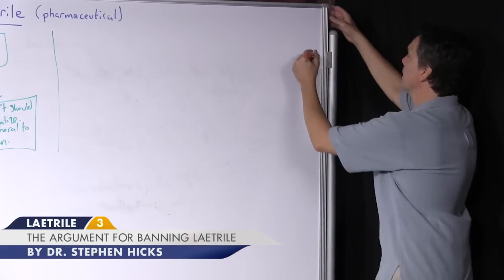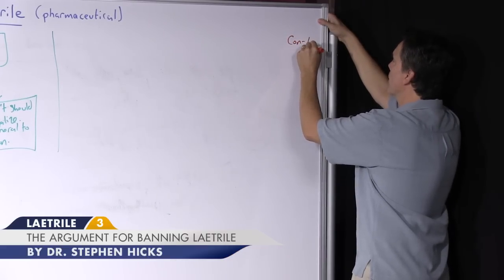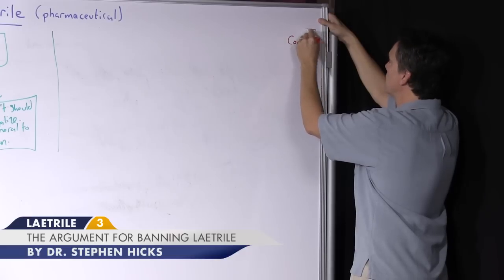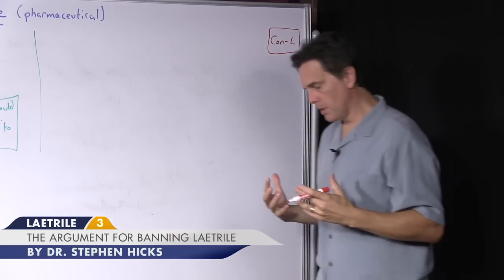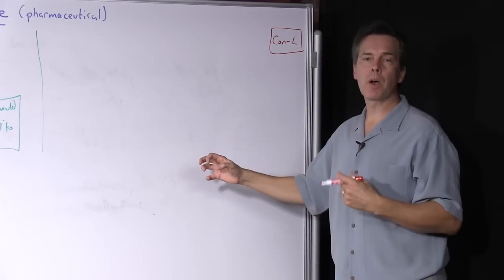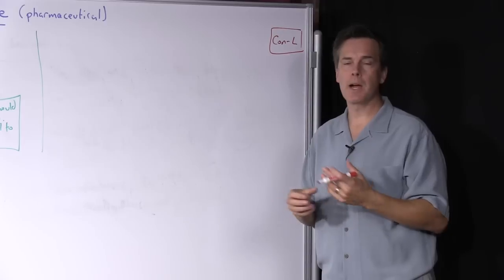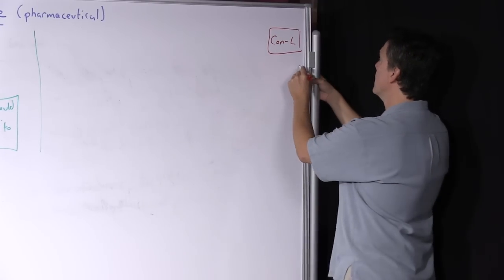All right, switching over to the other side of the argument, here we have the position against laetrile, or the position in favor of making laetrile illegal. How do we construct that argument in moral terms, leading to the conclusion that the right thing to do, or the proper thing to do, is for the government to use its power to ban this from the market, so to speak. And again,